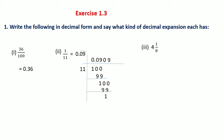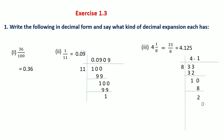The third question is the mixed fraction 4 and 1 upon 8. Converting it to the improper fraction: 4 times 8 is 32, plus 1 is 33 upon 8. This gives 4.125. Here the dividend is 33 and the divisor is 8. 8 times 4 is 32; the remainder is 1. Place a decimal point in the quotient and add a 0. 8 times 1 is 8; the remainder is 2. Add a 0; 8 times 2 is 16; the remainder is 4. Add a 0; 8 times 5 is 40; the remainder is 0. The division ends.